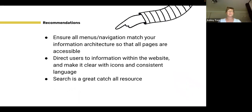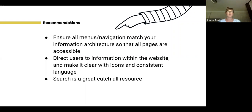Some recommendations from the audits for designing information architecture and navigation: Ensure that your menus, dropdown menus, and high-level navigation match your information architecture so that every page on your website is accessible — good visibility will promote findability and allow users to navigate easily and quickly to what they're looking for. Direct your users to information within the website and make it clear with icons and consistent language. If you're pointing someone to a particular page about a legal topic, when they get there they should see consistent language to reiterate they've landed in the right place.